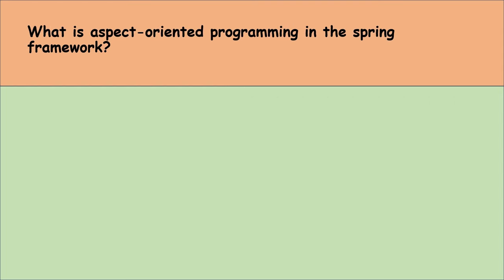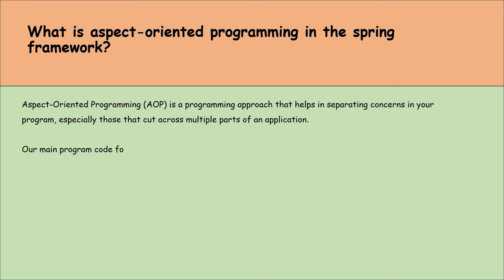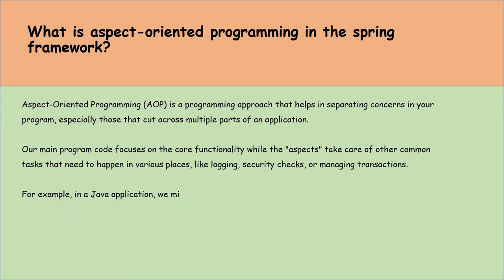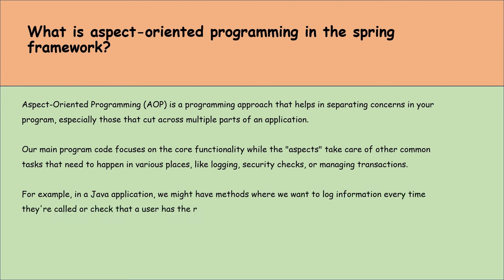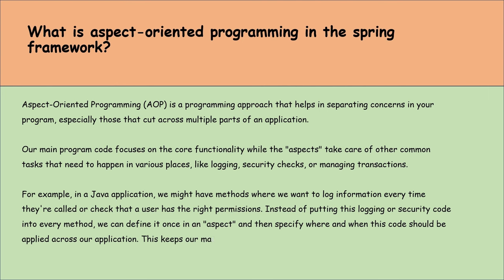What is aspect-oriented programming in the Spring framework? AOP is a programming approach that helps separate concerns in our program, especially those that cut across multiple parts of an application. The main program code focuses on core functionality while aspects take care of other common tasks needed in various places, like logging, security checks, or managing transactions. For example, in a Java application, instead of putting logging or security code into every method, we can define it once in an aspect and specify where and when this code should be applied across our application. This keeps our main code cleaner and more focused on its primary task.